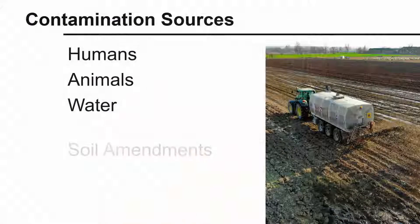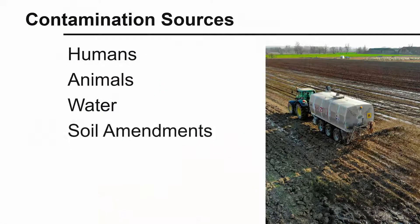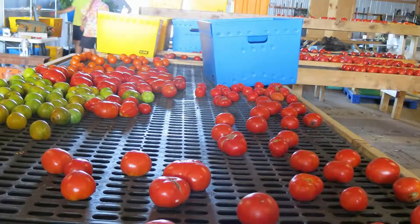Soil amendments like raw manure can be a source of contamination if improperly handled and applied. Take care not to spread soil-borne pathogens between fields, and wash equipment thoroughly after applying manure.